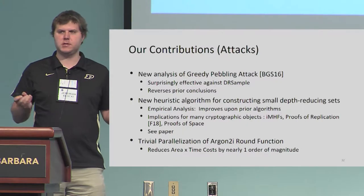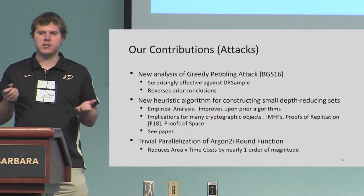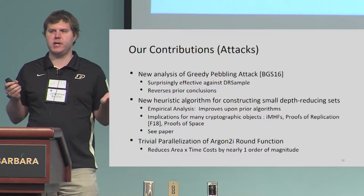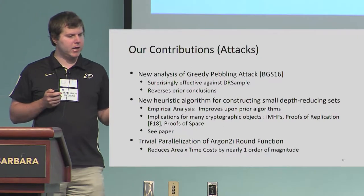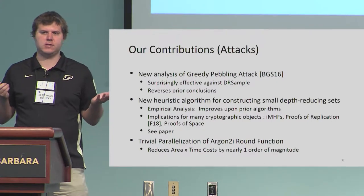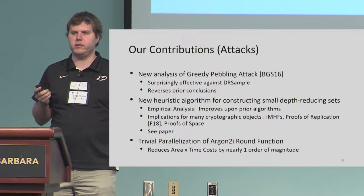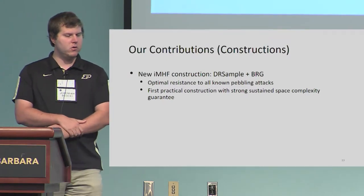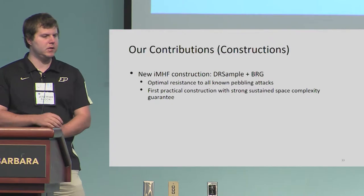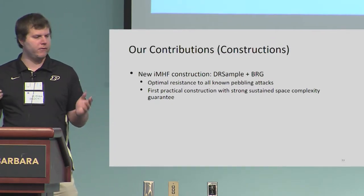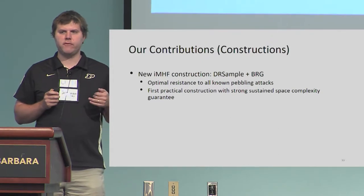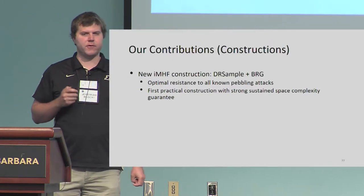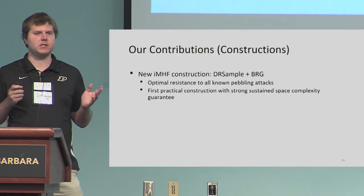Another contribution — and this is a trivial observation but nevertheless important — there's an easy way to parallelize computation of the Argon2i round function, and if you implement this, it reduces the attacker's cost by nearly an order of magnitude. On the positive side, we give a new construction of a data-independent memory-hard function by combining DR sample with a graph called a bit-reversal graph. We show this graph has optimal resistance to all known pebbling attacks, and it's the first practical construction with strong sustained space complexity guarantees.